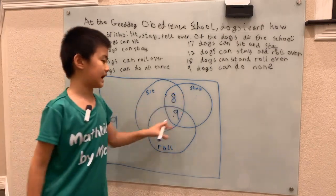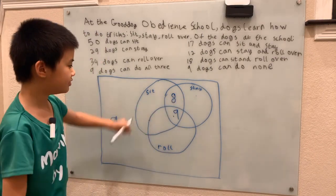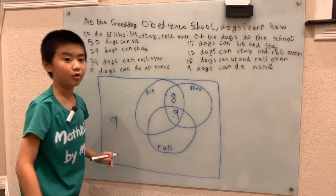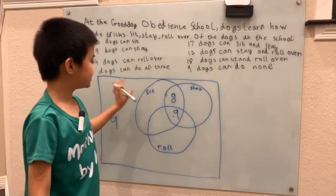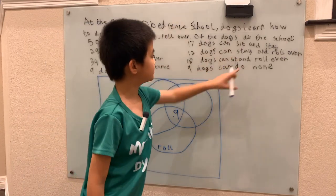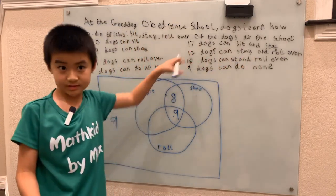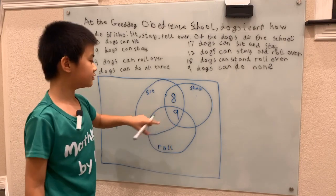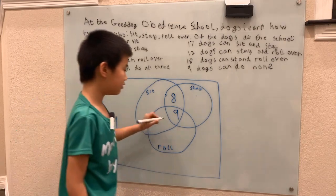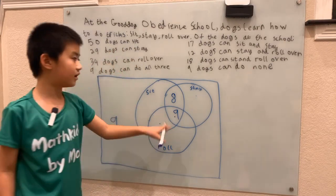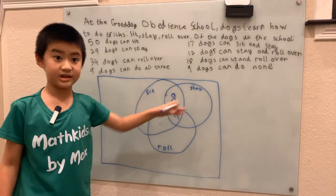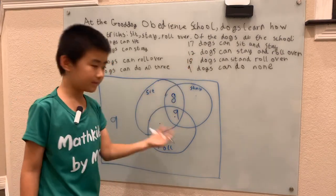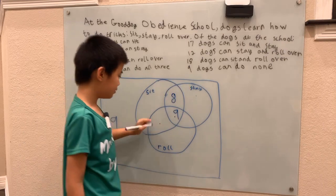Now this region is where all the dogs that can sit and roll go. There are 18 dogs that can sit and roll, and none of those dogs can also stay. So we subtract: 18 minus 9 gives us 9 here in the sit-and-roll-only overlap.